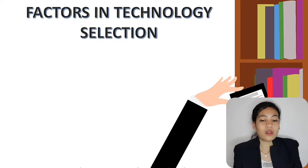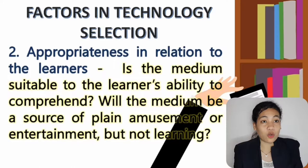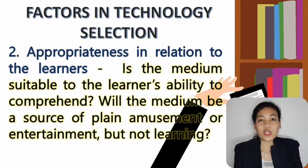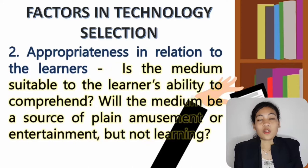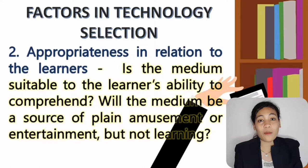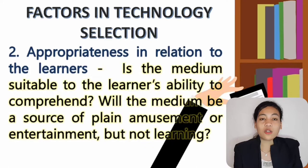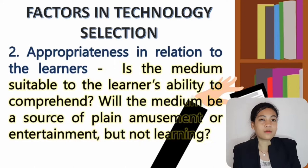The next factor is appropriateness in relation to the learners. Is the medium suitable to the learners' ability to comprehend? No one learns in the same way because of different learning styles and different abilities. To make teaching and learning more effective, we must see to it that the technology tool we use is based on the interest, skills, and ability of the learners. We integrate technology into lessons for students to be more interested in the subject and not merely as a source of amusement — for instance, delivering teaching through gamification or taking students on virtual projects, encouraging more active participation in the learning process.